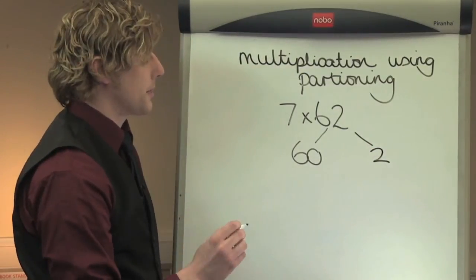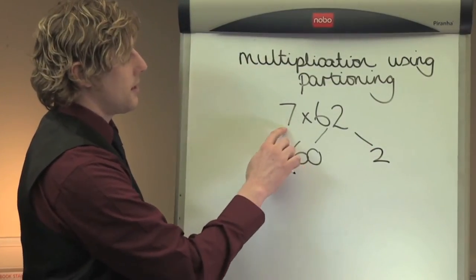I can now treat this as two separate multiplication sums, 7 times 60 and 7 times 2.